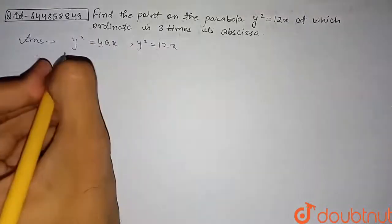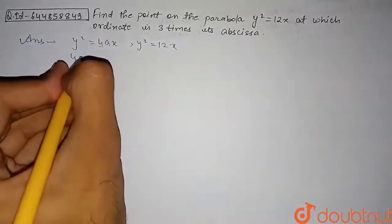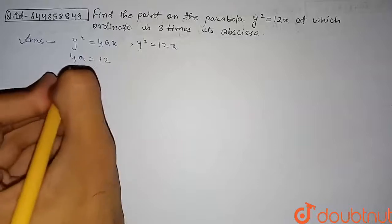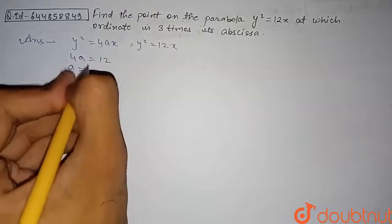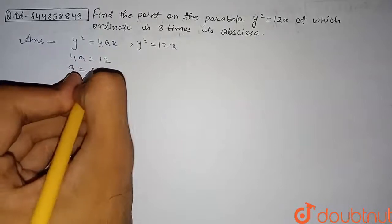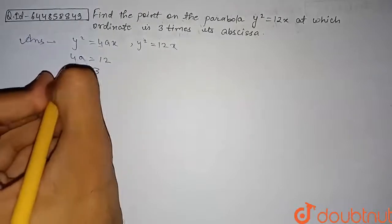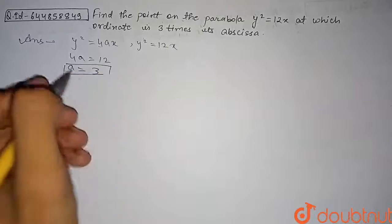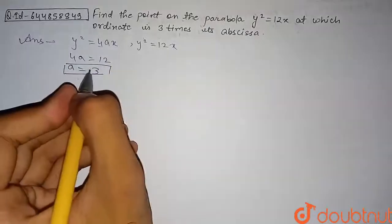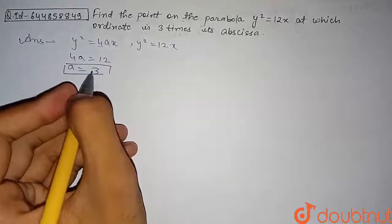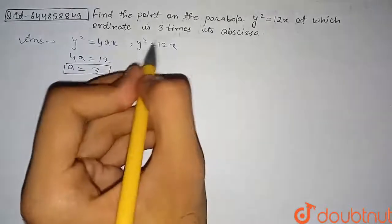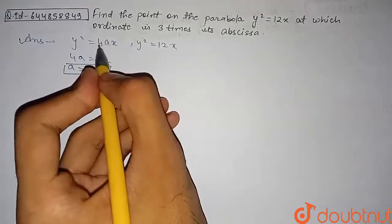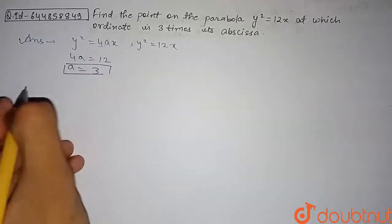From the standard form, 4a = 12, so a = 12/4 = 3. The value of a is 3. Now we will use the concept of parametric coordinates for this parabola.